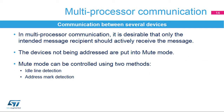To simplify communication between multiple processors, the USART supports a multiprocessor mode. In multiprocessor communication, it is desirable that only the intended message recipient should actively receive the message. The devices not being addressed are put into mute mode. The USART can enter or exit from mute mode using one of two methods: idle line detection and address mark detection.